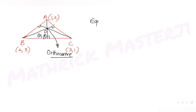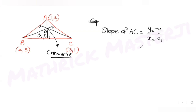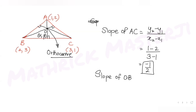We'll use the idea of slopes to find the coordinates alpha comma beta. The slope of AC is (y2 - y1)/(x2 - x1) = (1-2)/(3-1) = -1/2. Since OB is perpendicular to AC, the slope of OB is the negative reciprocal of -1/2, which is 2.